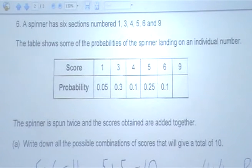The table shows some of the probabilities of the spinner landing on an individual number. Here's the table. And the instruction is, the spinner is spun twice and the scores obtained are added together. Part A asks you to write down all the possible combinations of scores that will give a total of 10.